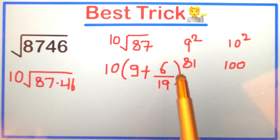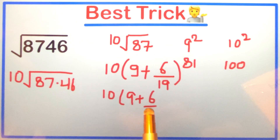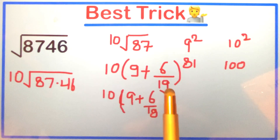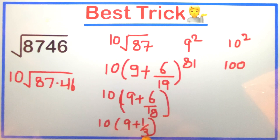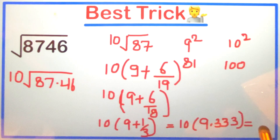To make it easier, we can approximate 19 as 18, since we are only calculating the approximate value — there may be a slight difference in the decimal places. So it becomes 9 + 6/18. Simplifying, 6/18 equals 1/3, which is 0.333. So it becomes 10 × 9.333, and multiplying by 10 our answer is 93.3.